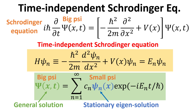The time-dependent Schrödinger equation, which was introduced in our previous videos, can be viewed as a quantum analog of Newton's second law of motion, which describes the quantum dynamics of the wave function, herein denoted by the symbol big psi. For many problems in quantum mechanics, we are only interested in time-independent potentials V, which means V is only a function of position x.